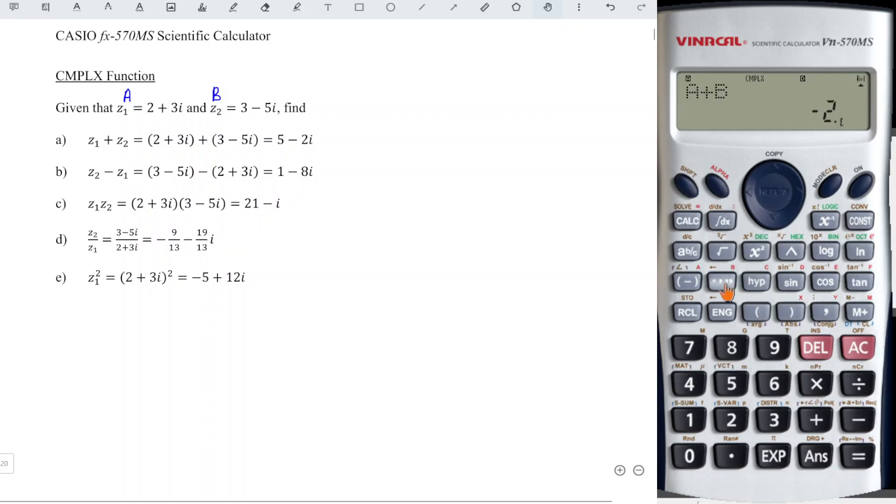Which is b - a. So we have 1, shift equals to get -8i.